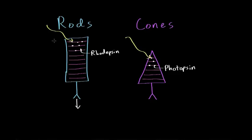Now let's look at the differences. So in an average retina, there are about 120 million rods. In contrast, there are about 6 million cones per retina. So there are about 20 times more rods than there are cones in each eye.